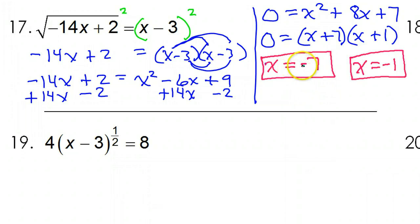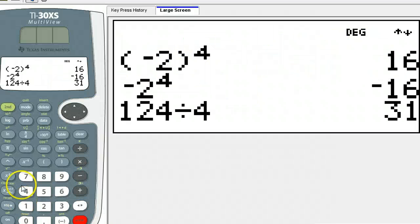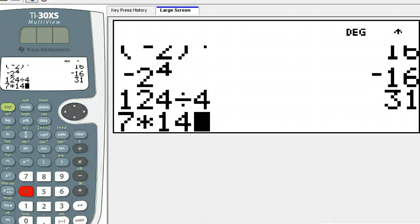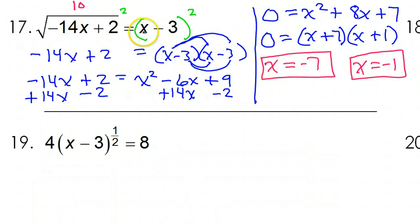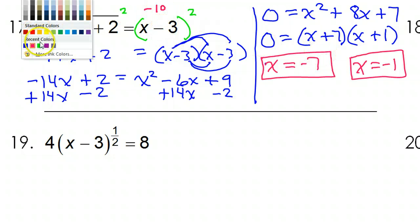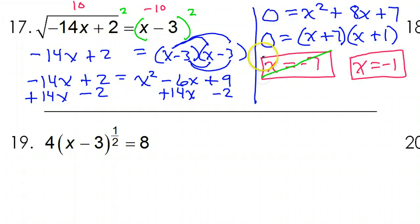I'm going to mentally plug these back in to check them. If I put in negative 7, 7 times 14 is 98, so I'd have 98 plus 2 — that's 100, and the square root is 10, positive 10. But if I put negative 7 on the right side, negative 7 minus 3 would be negative 10. So that's a fail — the negative 7 is extraneous.